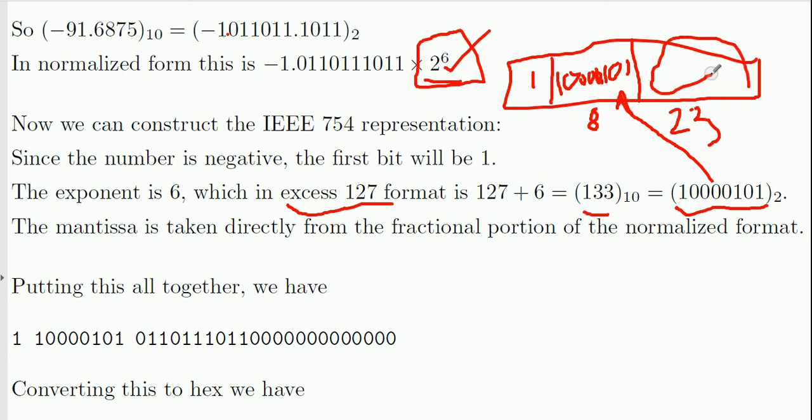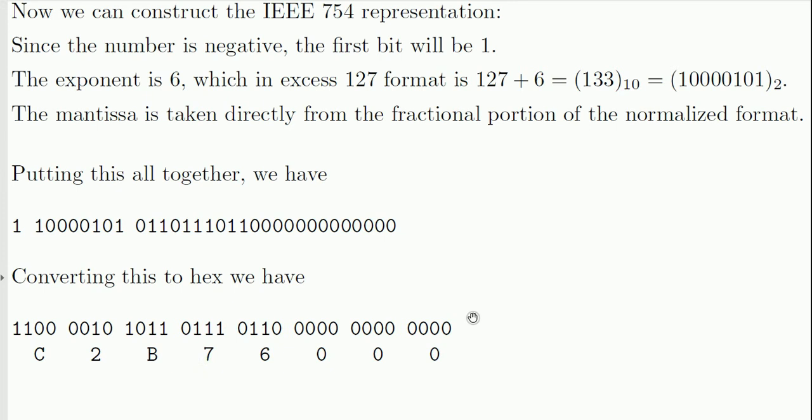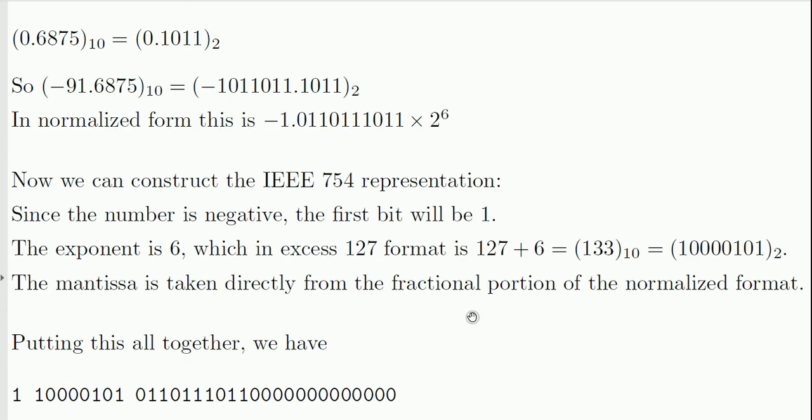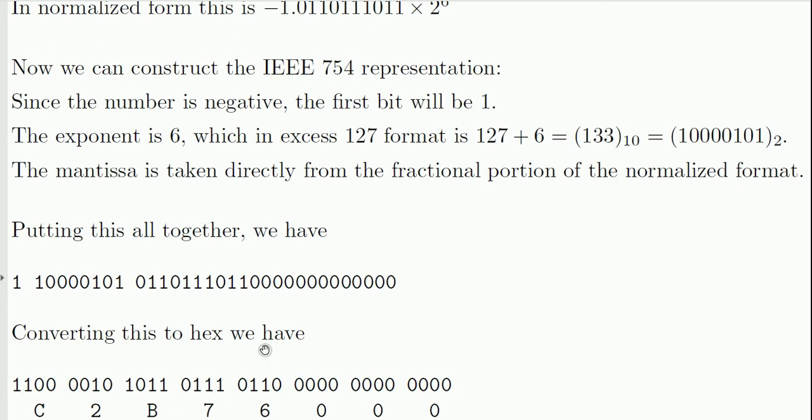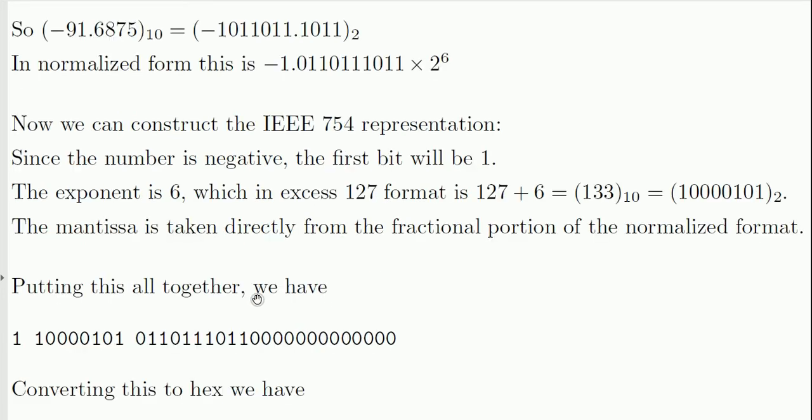Now the only part that is left is this part. So we're going to get that. Now we got this part. We got the exponent part. Where will we get this? We actually got this from here. You see 0110. Now how many digits are here? 1, 2, 3, 4, 5, 6, 7, 8, 9, 10. But I need 23. No problem. Just put 0s until you get 23 bits. It doesn't make any difference.